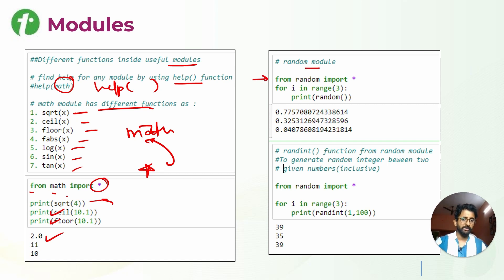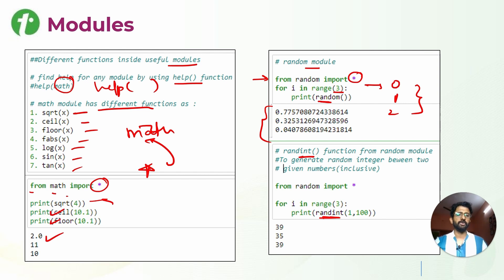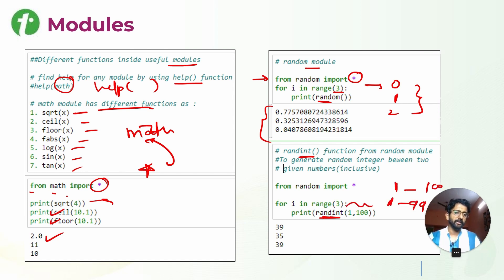Similarly, we have a random module. Whenever you want to do certain random operations, use 'from random import *'. You can randomly generate numbers - for example, using a loop with range(3) that executes three times, generating a random number each time. The randint() function creates a random integer within a range, such as 1 to 100, meaning values from 1 to 99.